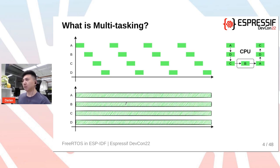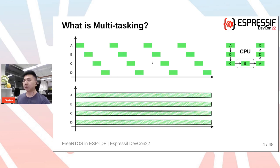Let's cover the basics. What is multitasking? Essentially a CPU can only do one thing at a time. So if we want to create the illusion that the CPU is executing multiple things in parallel, the CPU can switch between tasks rapidly, creating the illusion that multiple tasks are running in parallel.